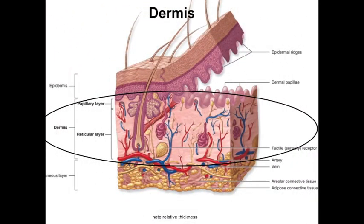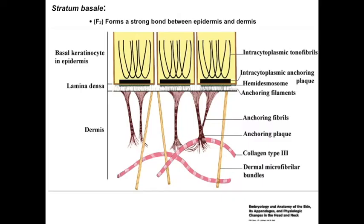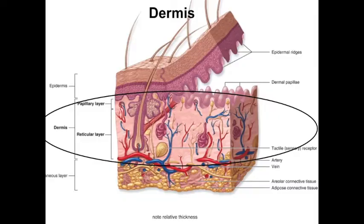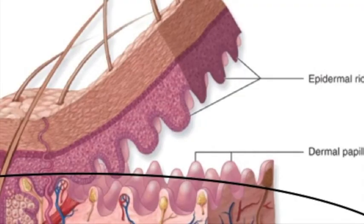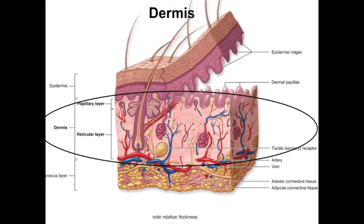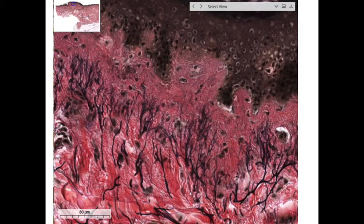This video goes over the dermis and some of its accessory structures. The epithelia rests on its basement membrane, which connects to the underlying connective tissue of the dermis. While the epidermis with its closely packed layered cells provides a barrier function, the dermis consists of fibrous connective tissue with a matrix of collagen and abundant elastin fibers that provide strength and elasticity.